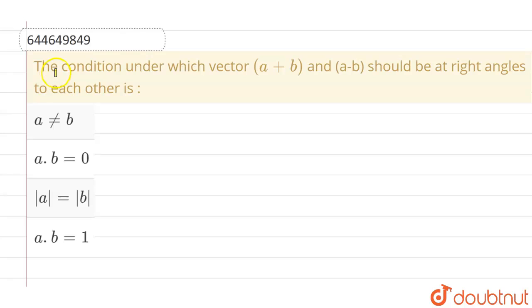Hello everyone, if you talk about this question, the given question is the condition under which vector (a+b) and (a-b) should be at right angles to each other. The given options are a is not equals to b,